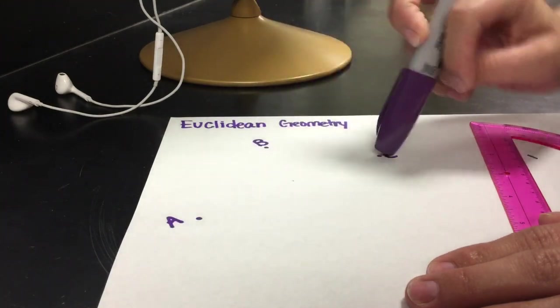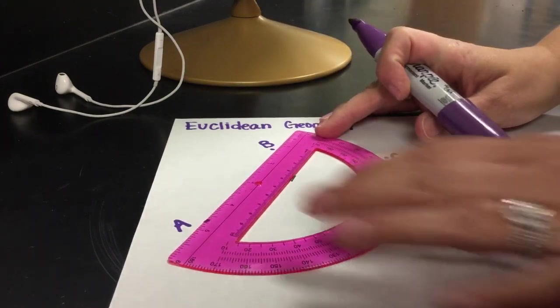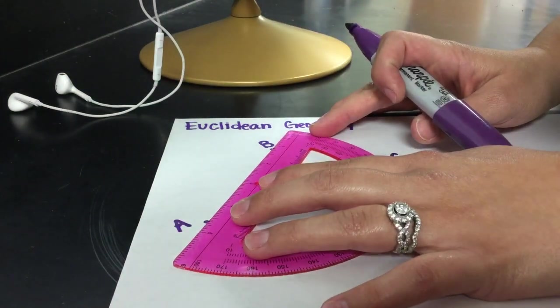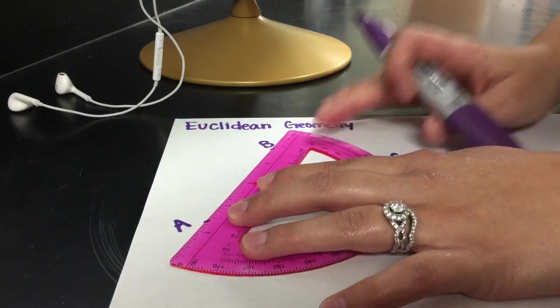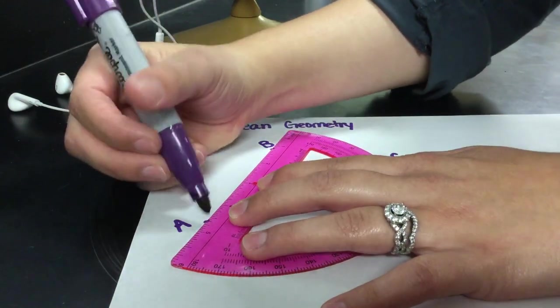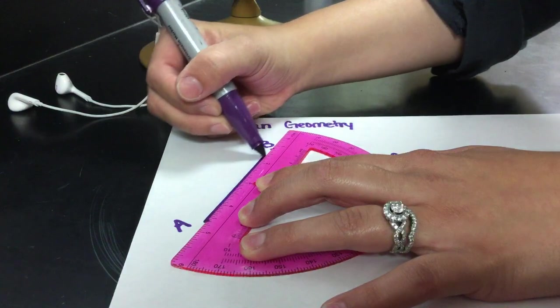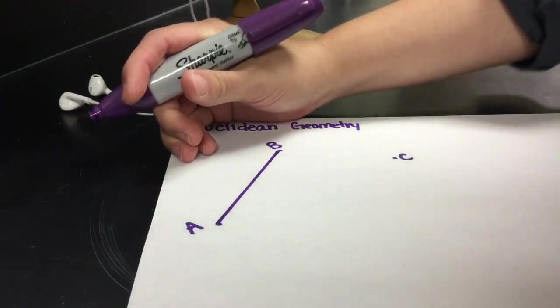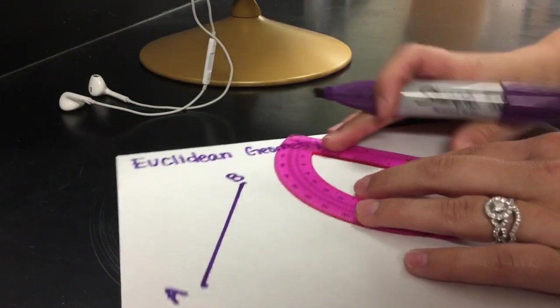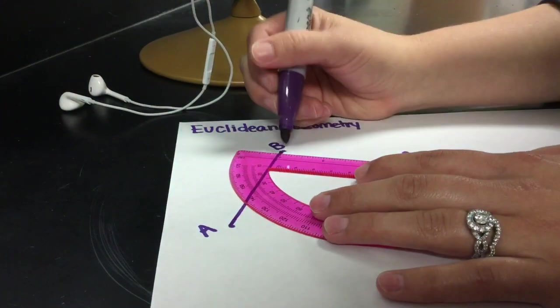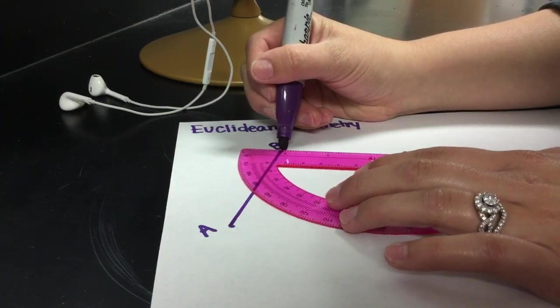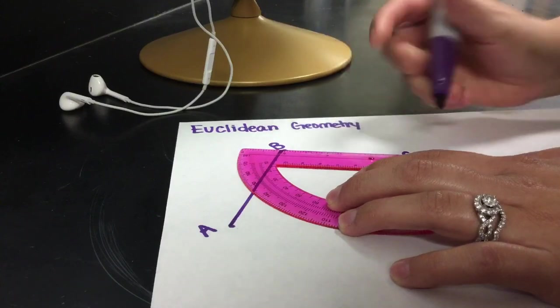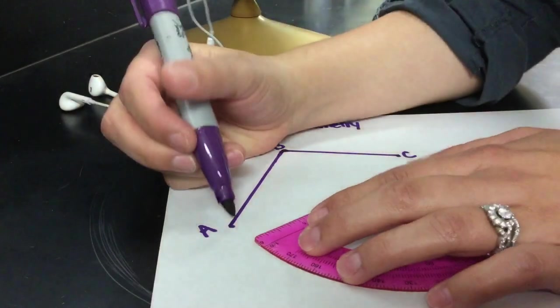are three different points A, B, C. I'm going to connect those three points, which is going to create what we call a triangle. So, I'm going to create this triangle by connecting these three points.